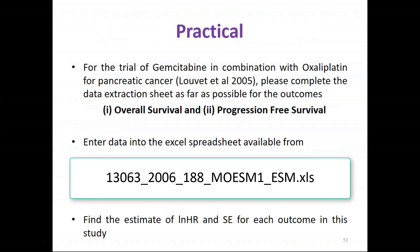You've also got access to a brief practical and some solutions. In that practical there's a trial publication by Louvet et al. comparing gemcitabine against gemcitabine in combination with oxaliplatin for pancreatic cancer. The task is to complete the data extraction sheet for the outcome of overall survival and, if you've got time, progression free survival. You can then input that into the spreadsheet to obtain the estimate of log hazard ratio and standard error for these outcomes in this study.